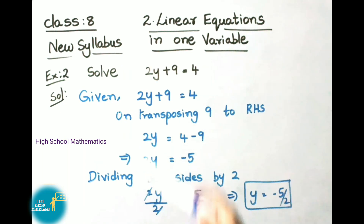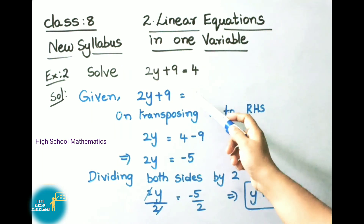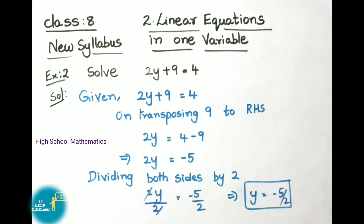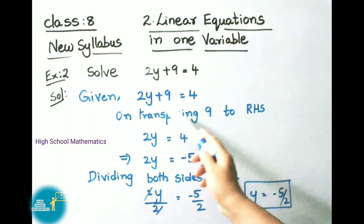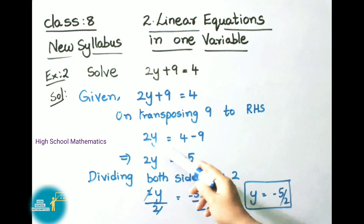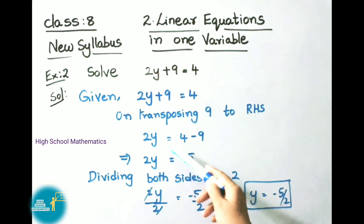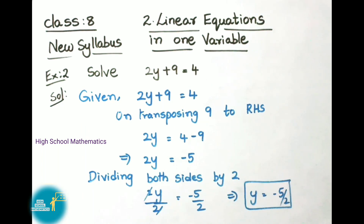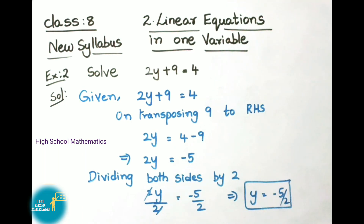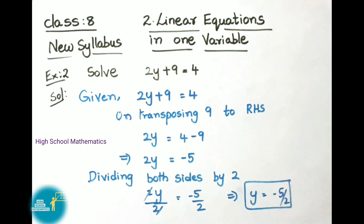See now example 2. Solve 2y plus 9 equals to 4. Let us see the solution. Given 2y plus 9 equals to 4. On transposing 9 to RHS it becomes 2y equals to 4 minus 9. That implies 2y equals to minus 5. Now dividing both sides by 2, so 2y by 2 equals to minus 5 by 2. On cancellation we got y equals to minus 5 by 2.